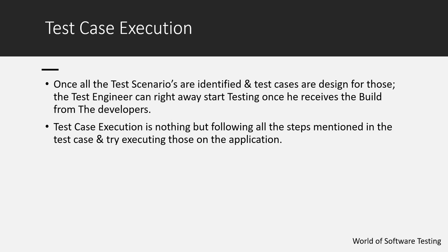Once all the scenarios are identified and test cases are designed, the test engineer can start testing once they receive the build from the developers. The test case execution is nothing but following all the steps mentioned in the test case, executing those on the application, and then checking if the actual results are matching with the expected results. That is the core responsibility of the test engineer during execution.